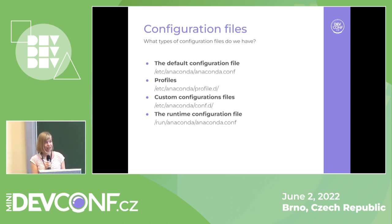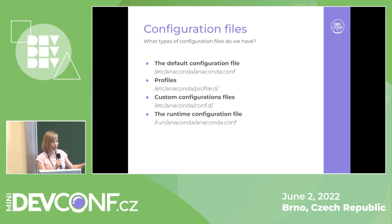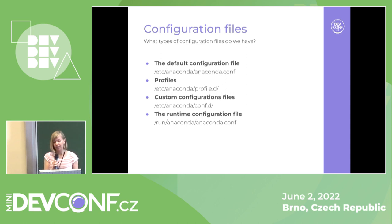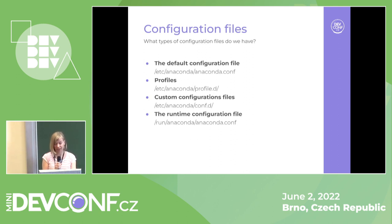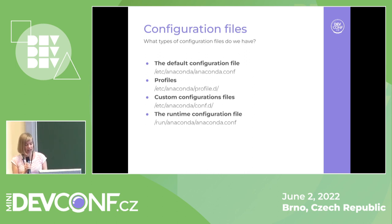The first type is the default configuration file — a fully defined configuration that serves as the base layer. It contains every default that would normally be in the code, because we had a lot of hard-coded fallbacks. Since they were hard-coded, they were very hard to change or debug. Now it's there and we use it as a fallback. The second type is profiles — named configurations for specific distributions. Third, we support custom configuration files in a drop directory that are automatically loaded and applied. And the last one is the runtime configuration file, which we generate.